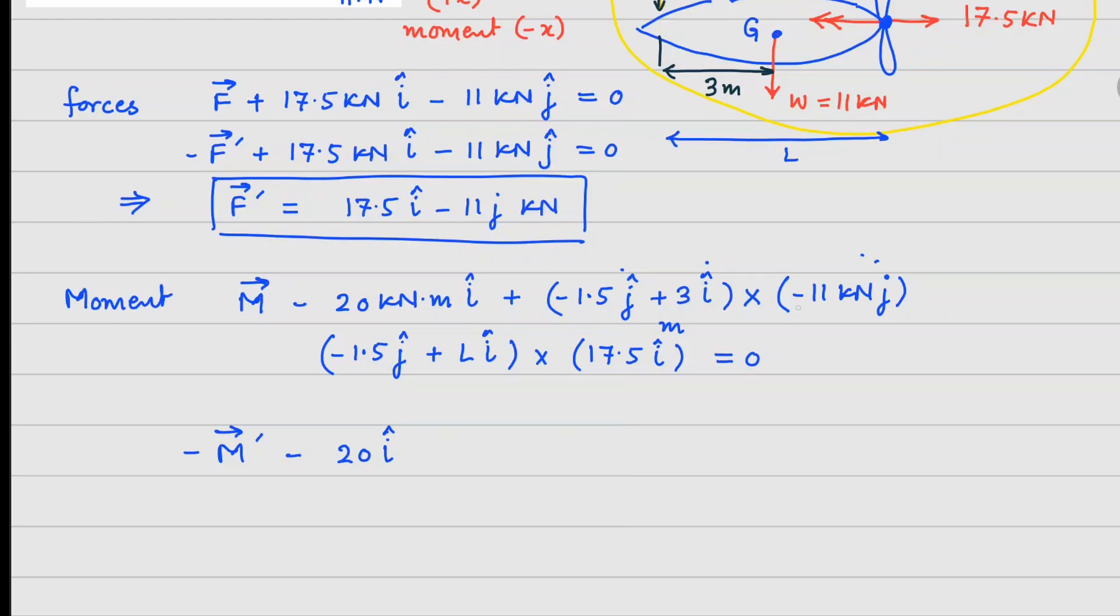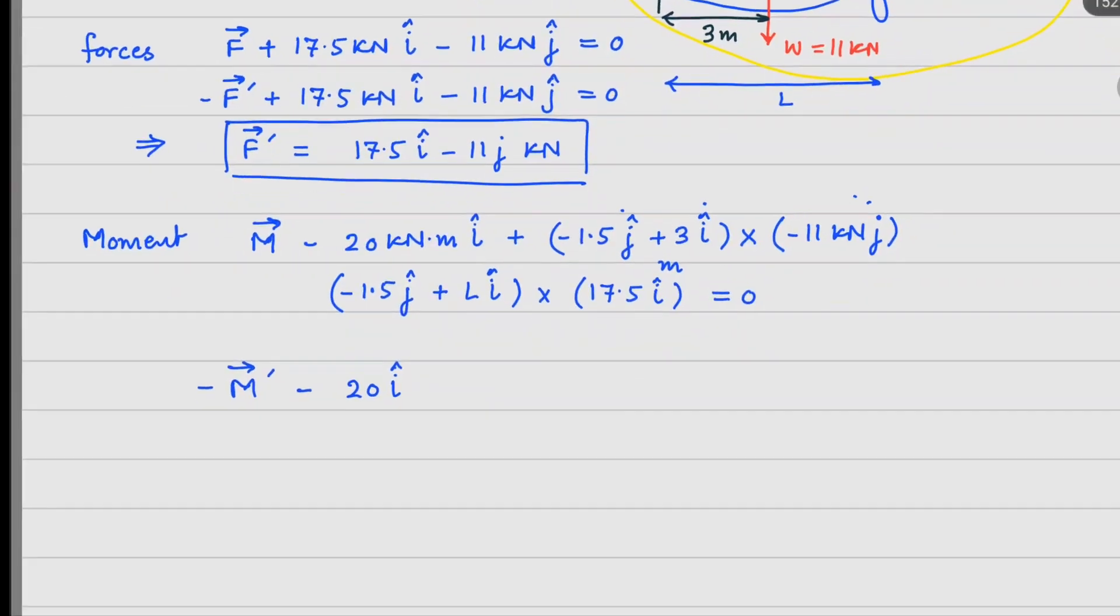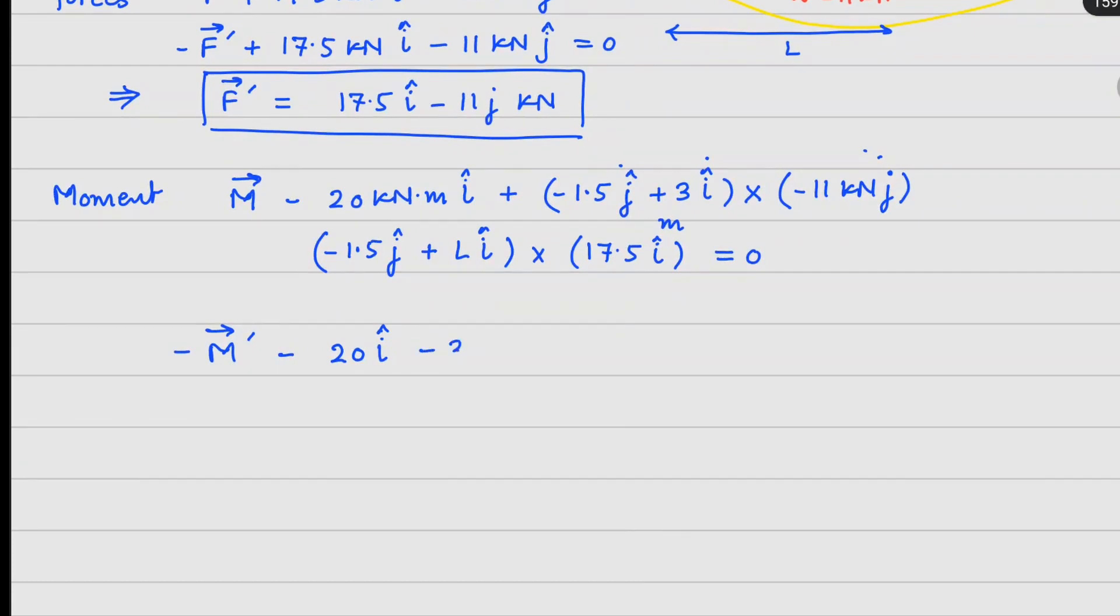Now, we come here. So this is J cross I. So this is going to give us minus K cap. There is a negative sign already there. So 1.5 into 17.5 plus sign again K cap equals to 0.